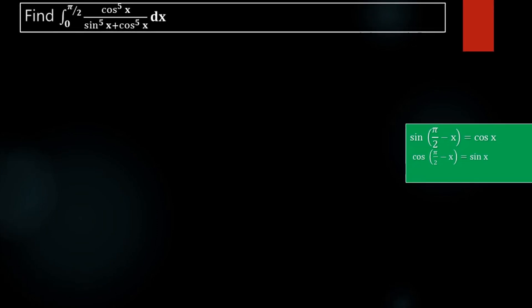Find the integral from 0 to π/2 of cos⁵x divided by (sin⁵x plus cos⁵x) dx.